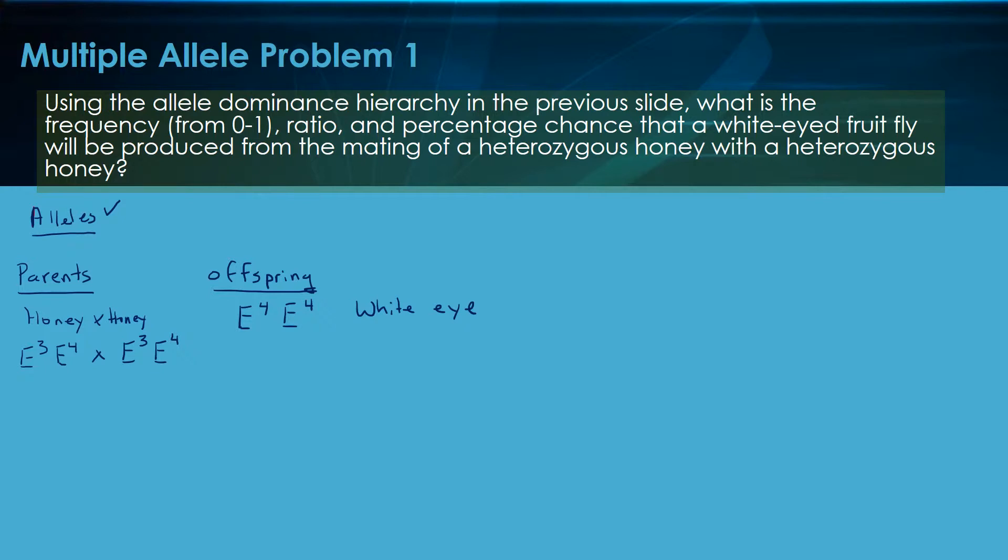We want to figure out the frequency. So that's going to be zero point something. We want to do a ratio and a percentage. We want to be comfortable with all three of these potential answers to this question. Let's do our Punnett square and then get our answer.